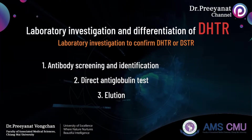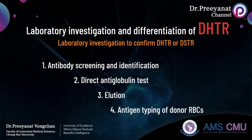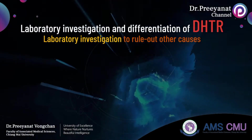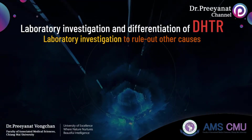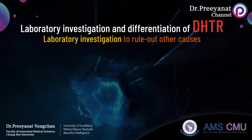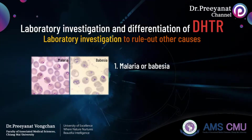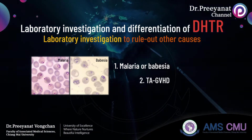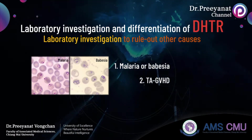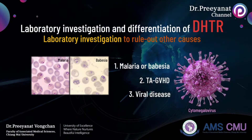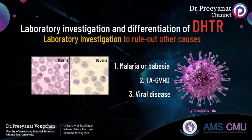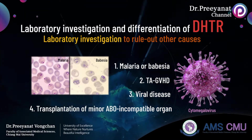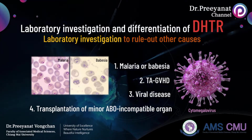If a segment from the unit is available, antigen typing may help to confirm the diagnosis. Some laboratory investigations should be performed to rule out all other causes of fever and hemolysis. Fever with hemolysis following transfusion may result from contamination with intracellular red blood cell parasites such as malaria or Babesia, which is a tick-borne disease. Fever without hemolysis may indicate graft-versus-host disease (TA-GvHD) or transfusion-transmitted viral disease such as cytomegalovirus. In addition, hemolysis resulting from passive antibody-producing lymphocytes may be found after transplantation of a minor ABO-incompatible organ, such as transplantation of a group O liver to a group A patient.